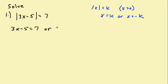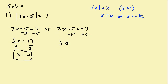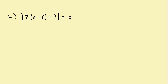Or what's inside the absolute value equals negative k — in this case that's negative 7. We solve each one separately. Adding 5 to both sides gives 3x equals 12, divide by 3, x equals 4. For the other equation, adding 5 to both sides gives 3x equals negative 2, divide by 3, x equals negative 2/3.